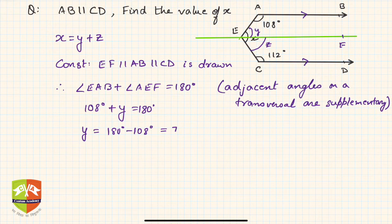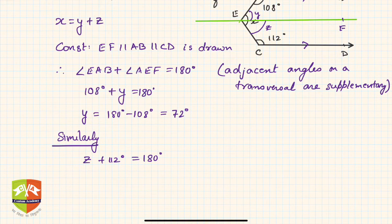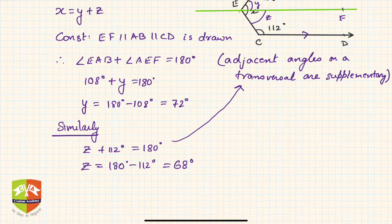Similarly, angle z plus 112 degrees will be 180 degrees, same reason. Hence z is equal to 180 degrees minus 112 degrees, which is 68 degrees. So hence, what is the final value of x? x is y plus z, which is 72 degrees plus 68 degrees, hence it is 140 degrees.